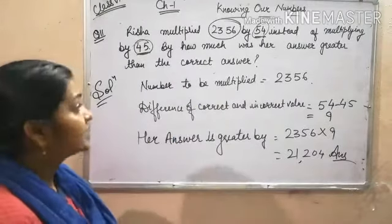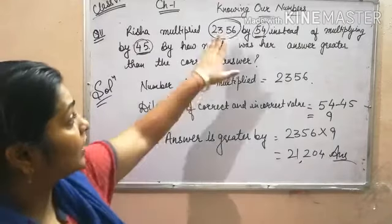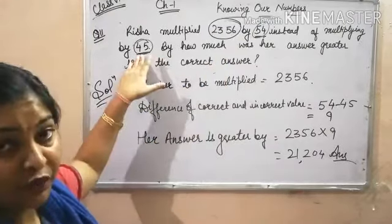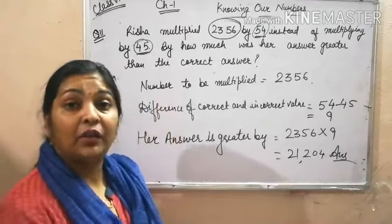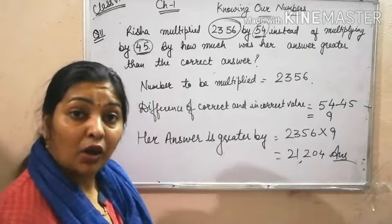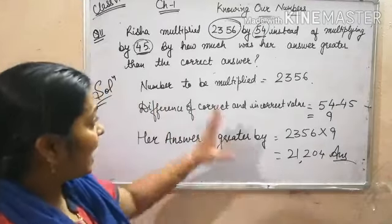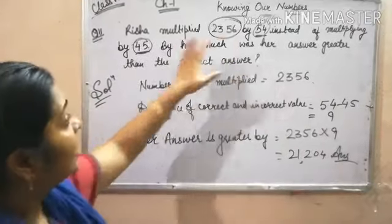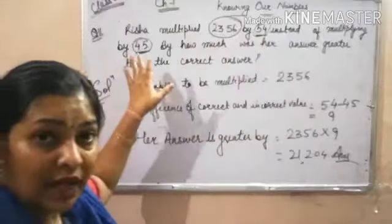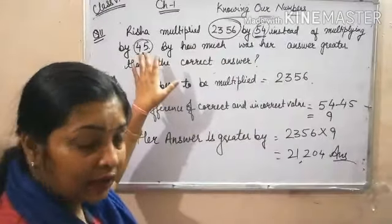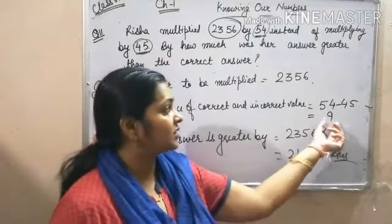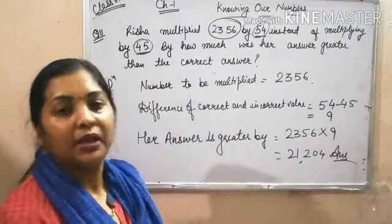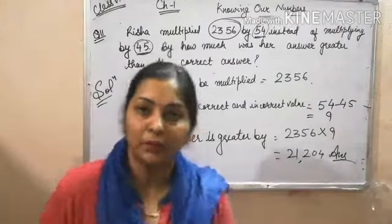Isn't it easy? Instead of first multiplying 2356 by 54, then 2356 by 45 and subtracting — which takes a lot of calculation — we simplified the method. Just find the difference of the correct value and incorrect value, and multiply it by the given number. That's all for this problem.